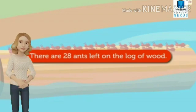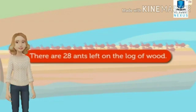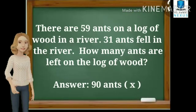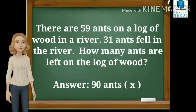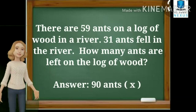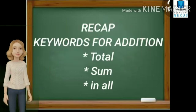There are 28 ants left on the log of wood. Is that clear children? So, keeping this information in mind, they have given us the answer 90 ants. So, the information given here is wrong. So, you need to put a cross.